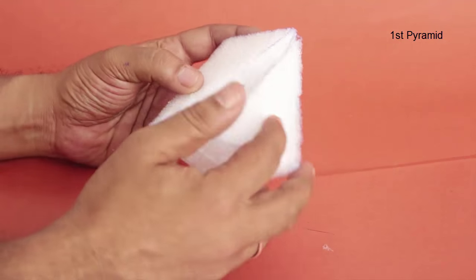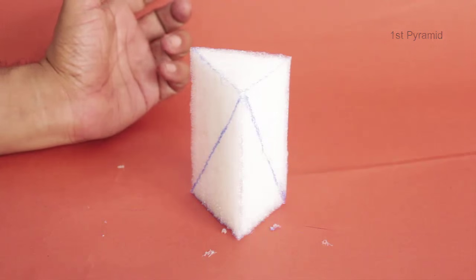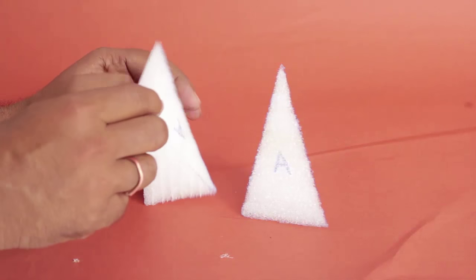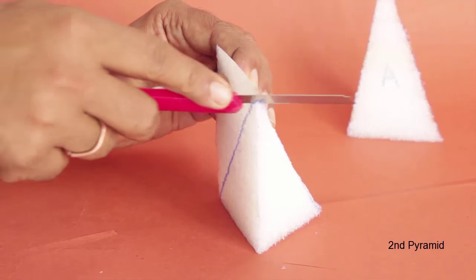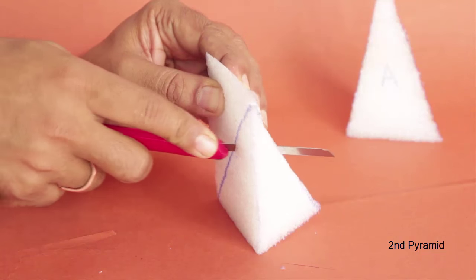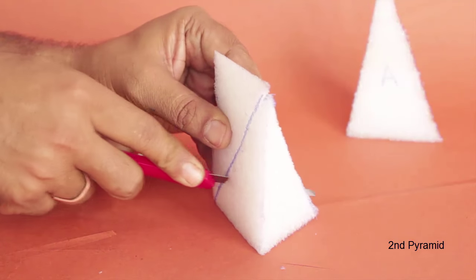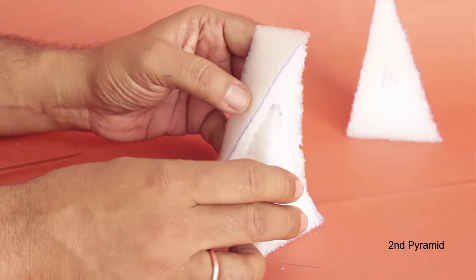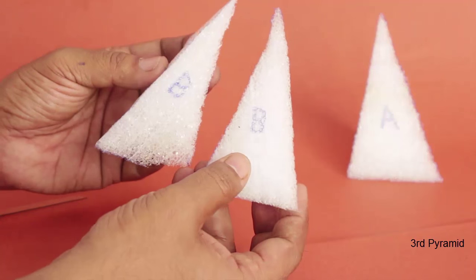Then we cut along this other edge and this makes the second pyramid. We mark this cut triangular face as B and the third structure left is the third pyramid. Now triangular pyramids are made of four triangular faces - a triangular base and three triangular faces joining this triangular base.